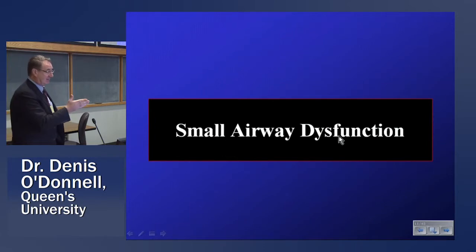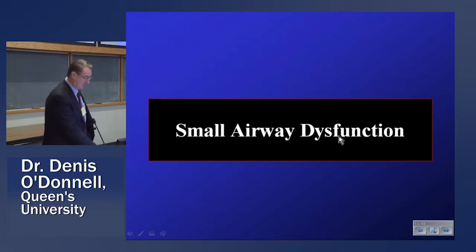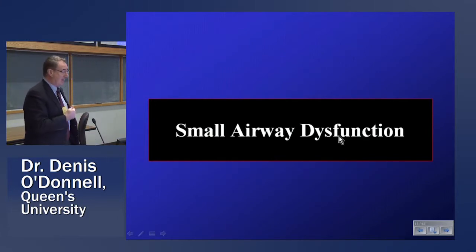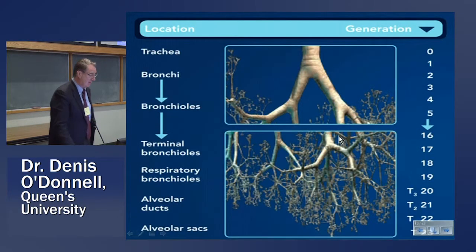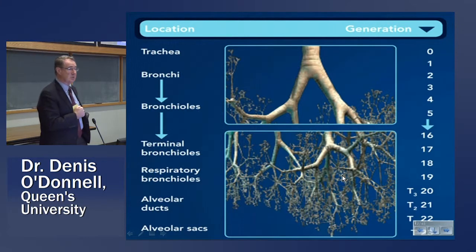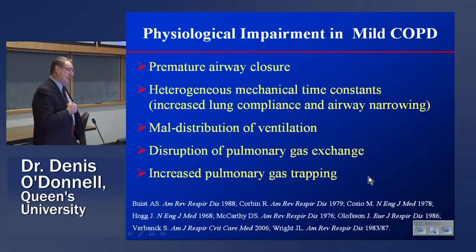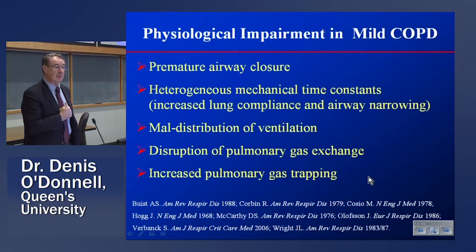The CAT score identifies people whose major problem is dyspnea and activity limitation. It's been known for many years that these people with preserved spirometry have extensive small airways disease, which we're not measuring on a regular basis. As Jim pointed out, the problem is in the silent zone — those airways less than 2 millimeters in diameter. That's where the inflammation is. If you look back into the literature from the 1970s, these patients have been extremely well characterized.